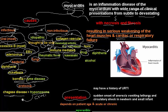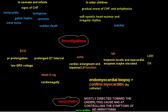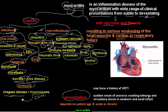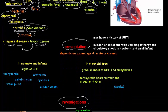Toxic myocarditis can be caused by drugs, the toxin of diphtheria, and excessive alcohol intake. So non-infectious causes include idiopathic, immune-mediated, collagen vascular disorders, and toxicity from drugs, alcohol, and diphtheria toxin.